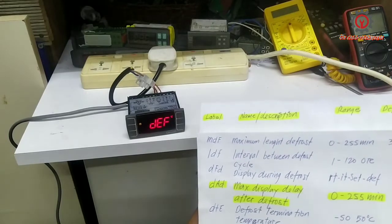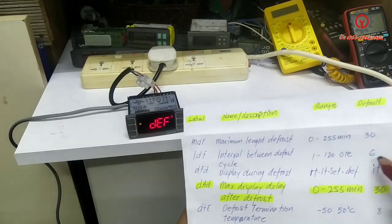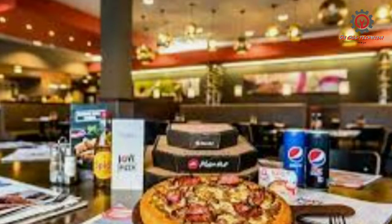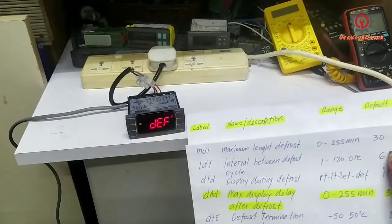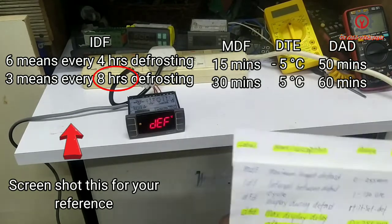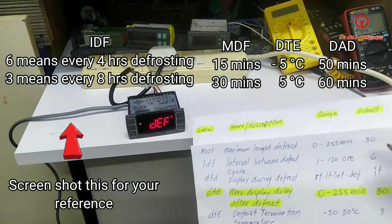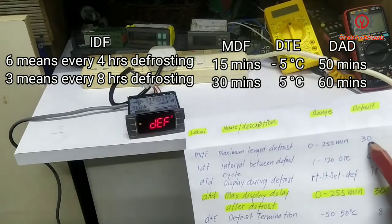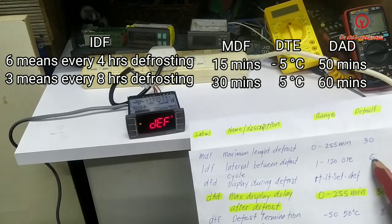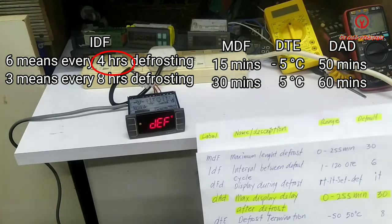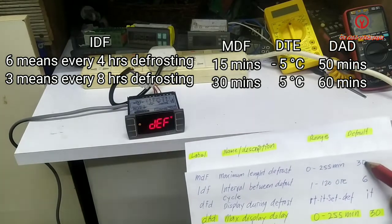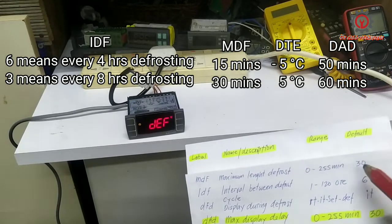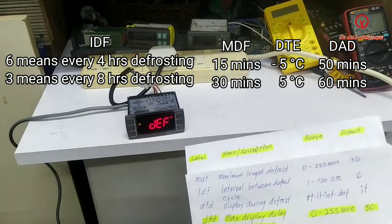You may also lessen the interval between defrost cycles. If the restaurant or supermarket you're working in is busy, meaning the door is frequently open, change this 6 to 3 so that every 8 hours this control will defrost. The maximum length of defrost for MDF ideal is 30 minutes. But if you're going to set it for 6 hours, meaning every 4 hours your unit will defrost, you need to lower this 30 minutes to 20 or 15, it depends.